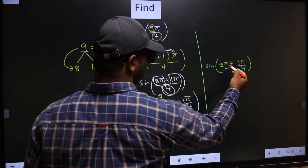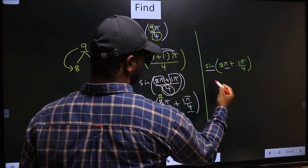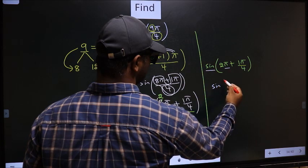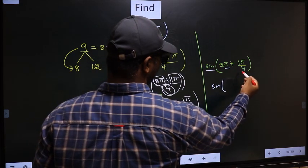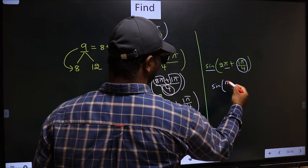Next, here we have π. So, sine is not going to change. It will remain sine. And, inside we get this angle: π/4.